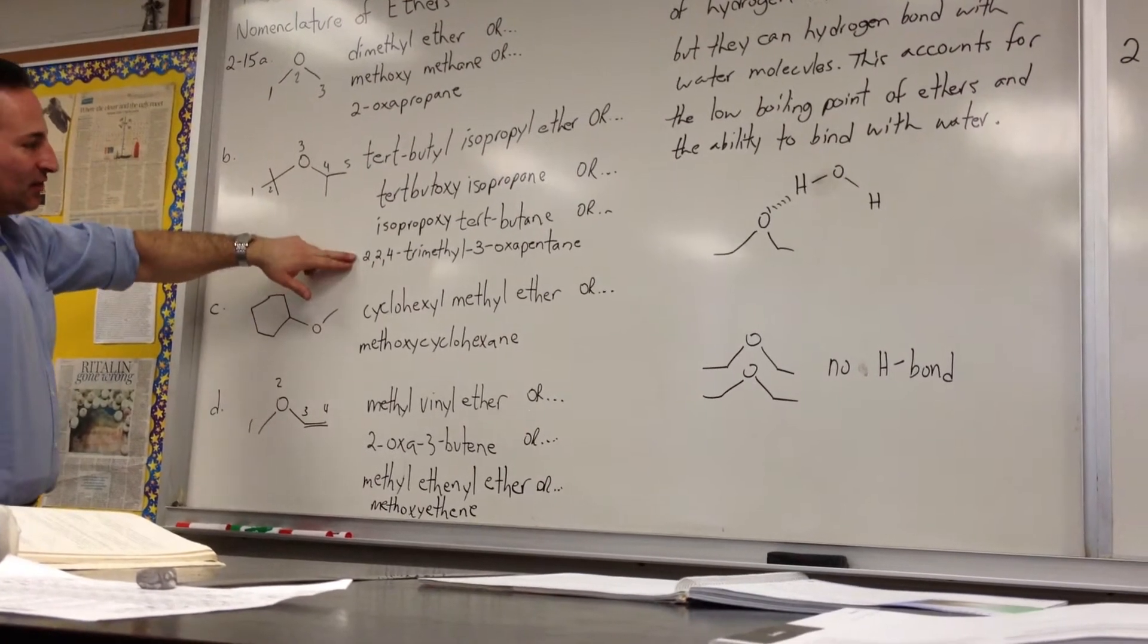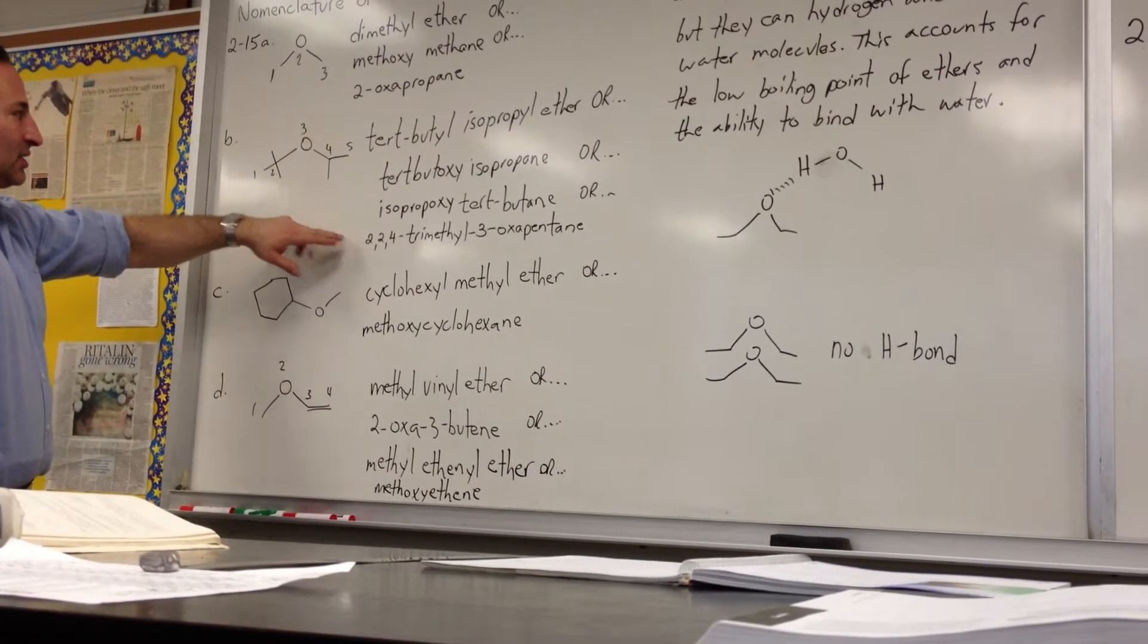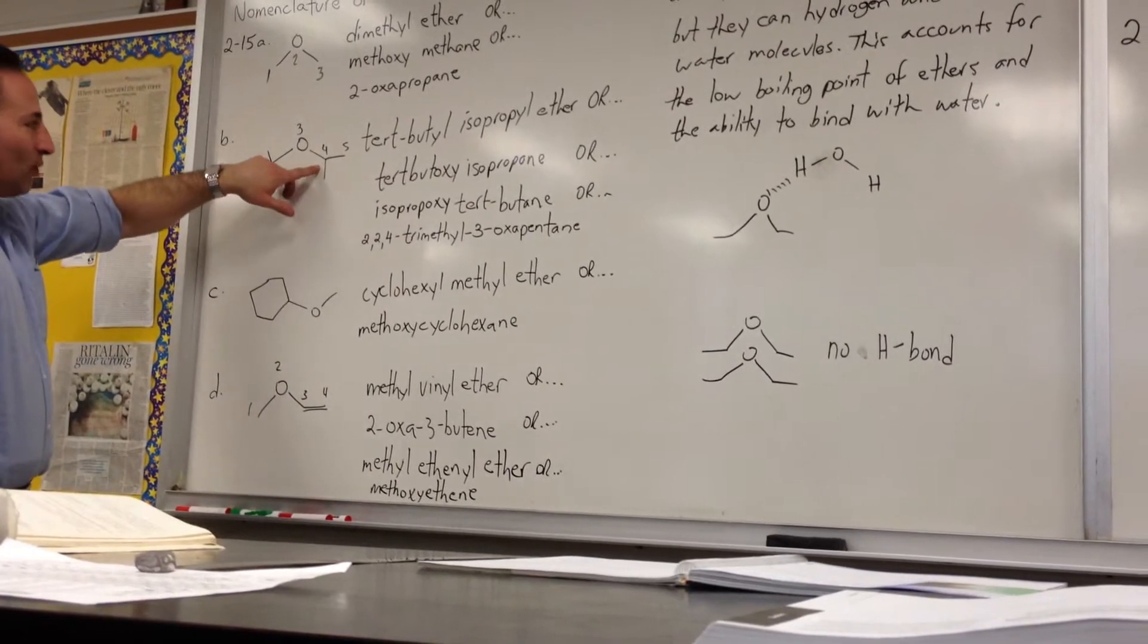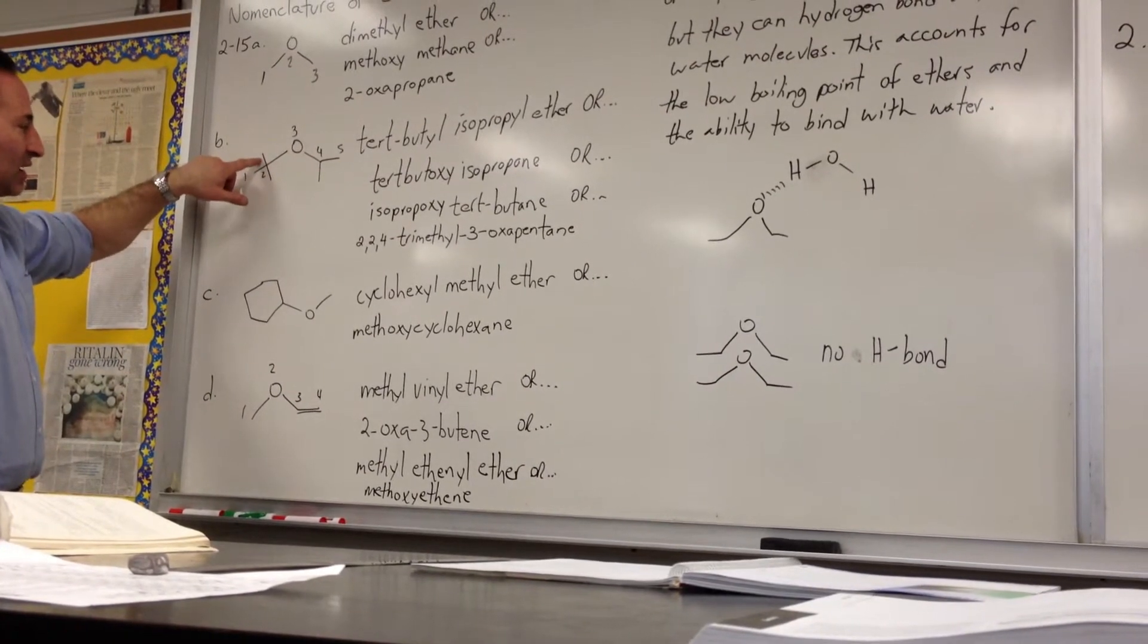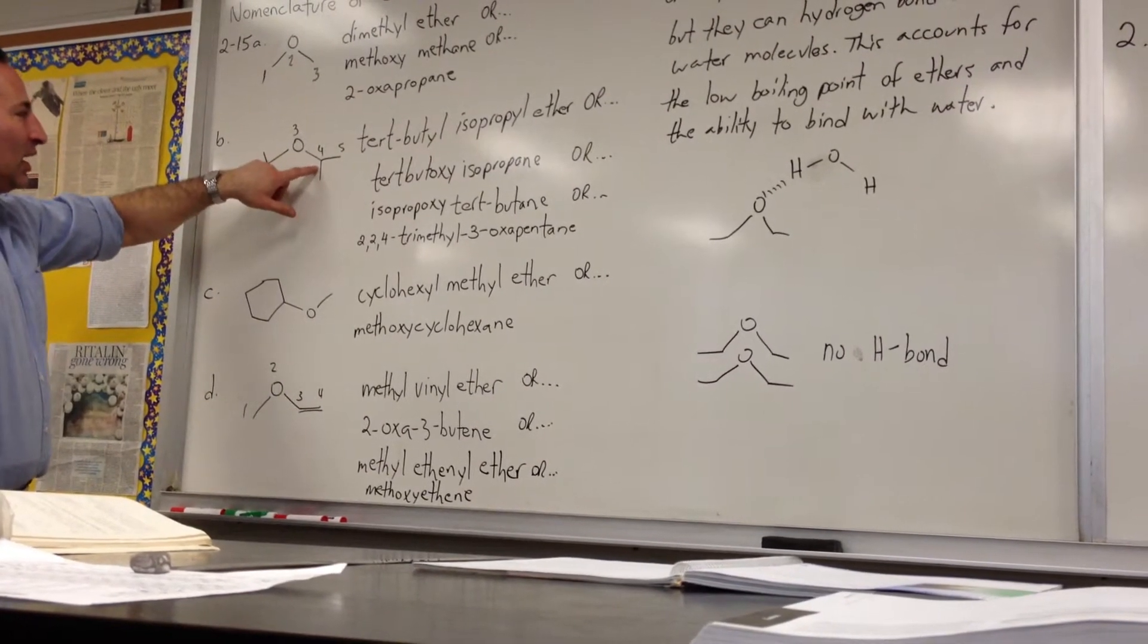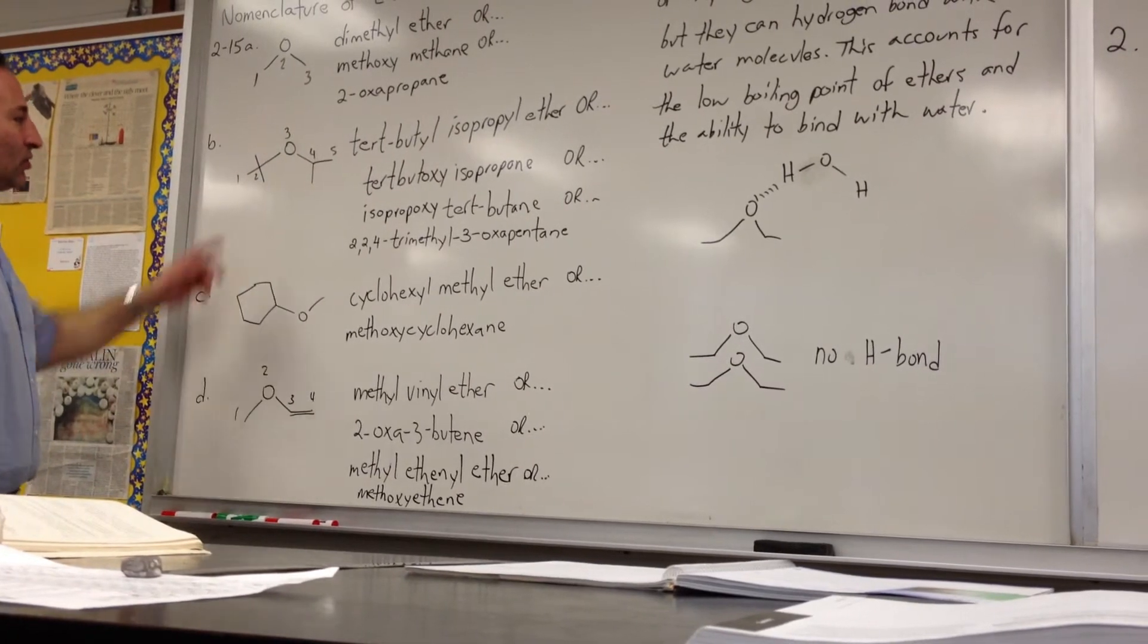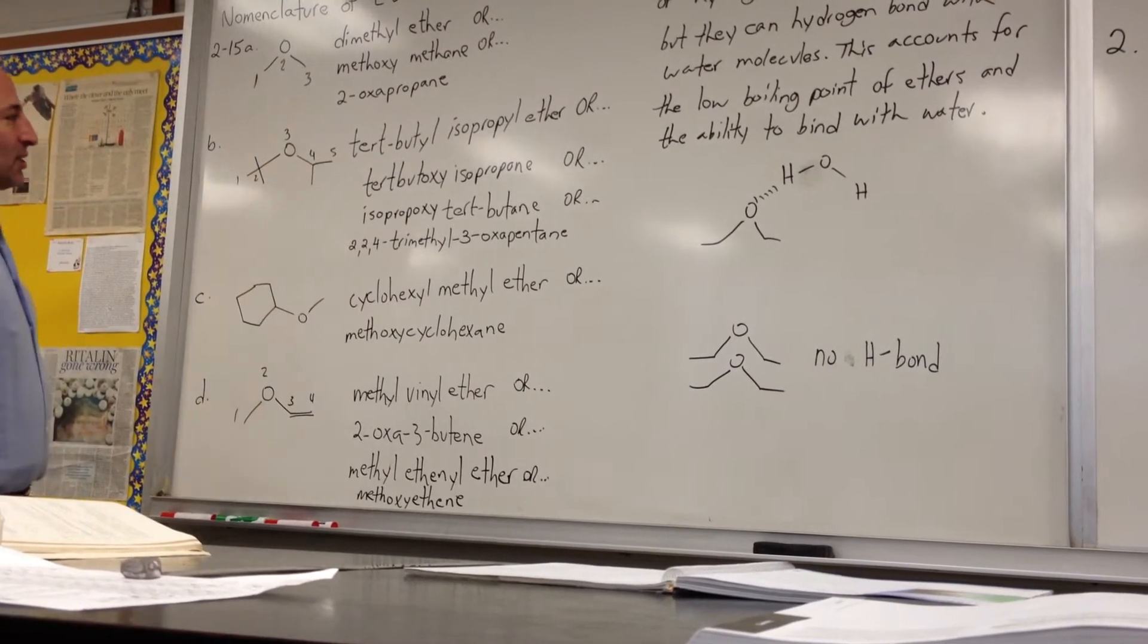And lastly, the one that I favor, because it's the most systematic, is to say 2-2-4. There's methyl groups at the second position and the fourth position. Three-oxapentane. So 2-2-4 trimethyl, three-oxapentane.